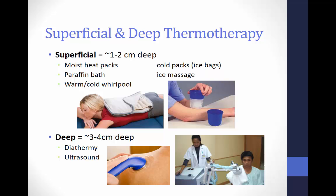During the course of this lecture, we will focus on superficial thermotherapies. Later in the semester, we will also get into the deeper thermotherapies. Superficial thermotherapy treats tissue approximately one to two centimeters deep. These treatments include moist hot packs, paraffin baths, warm whirlpools, cold whirlpools, cold packs, ice bags, and ice massage. Deep thermotherapy treats tissues approximately three to four centimeters deep, and these treatments include diathermy and ultrasound.